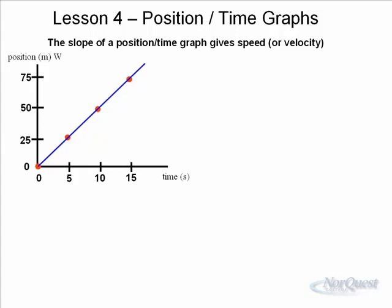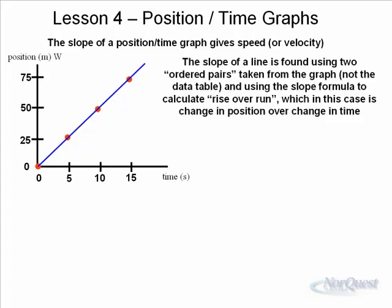This is a very important definition in physics 20, physics 30, and beyond. The slope of a line is found using two ordered pairs — taken from the graph, not from the data table — and using the slope formula to calculate the rise over run. I picked two points here: at 12 seconds it was at about 60, and at 4 seconds it was at about 20.